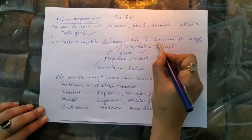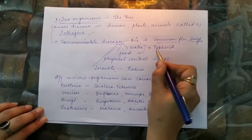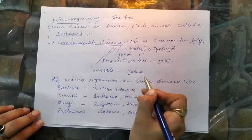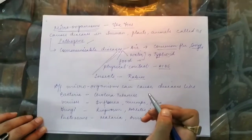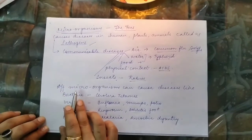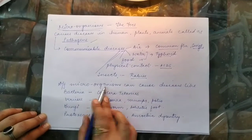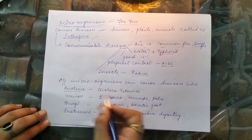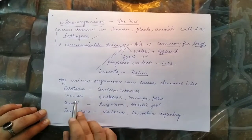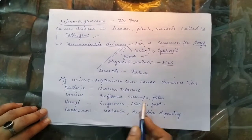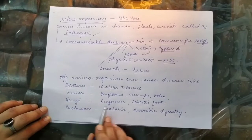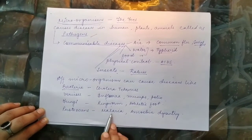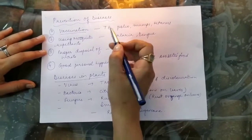Examples of communicable diseases: common flu and swine flu spread through air; typhoid spreads through water; AIDS spreads through physical contact; malaria spreads through insects. Different types of microorganisms cause different diseases: bacteria cause cholera and tetanus; viruses cause influenza, mumps, and polio; fungi cause ringworm and athlete's foot; protozoans cause malaria and amoebic dysentery.